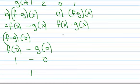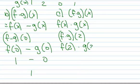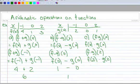I want to evaluate f times g at 2. So this really means f of 2, and then multiplied by g of 2. So when I put 2 into f of x up here in the table, 3 comes out.